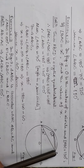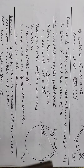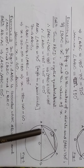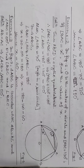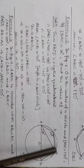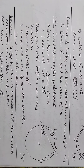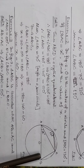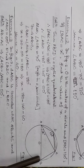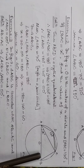ABCD is a cyclic quadrilateral because all four vertices A, B, C, and D lie on the circle. For a cyclic quadrilateral, opposite angles are supplementary, summing to 180 degrees. So angle ADC plus angle ABC equals 180 degrees, giving angle ABC equals 180 minus 130, which is 50 degrees.